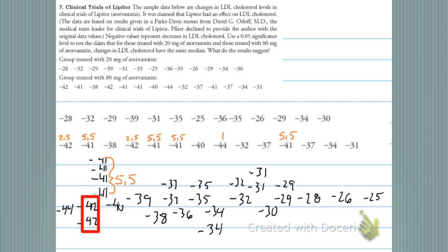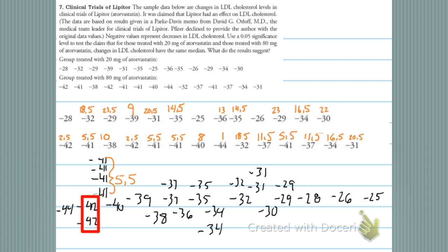5th, 6th, and 7th — I averaged those and they got 5.5. And then I'm ranking them from lowest to highest, and then I keep on keeping on. I almost have them all ranked.